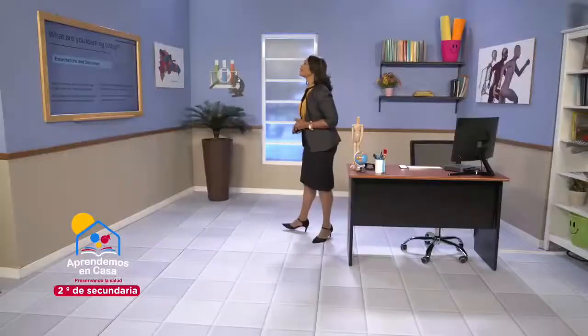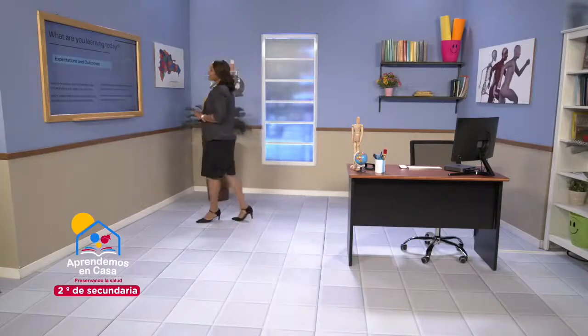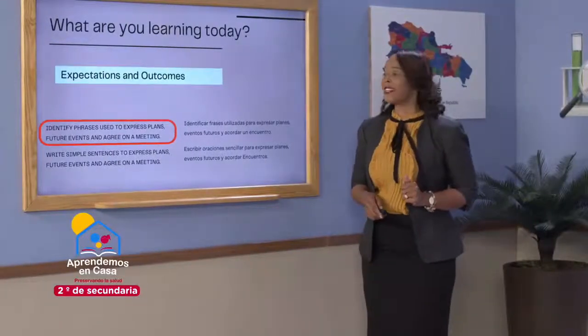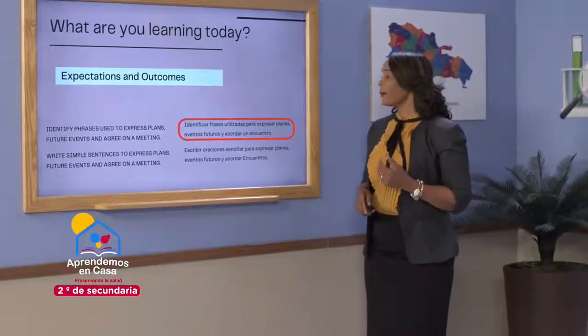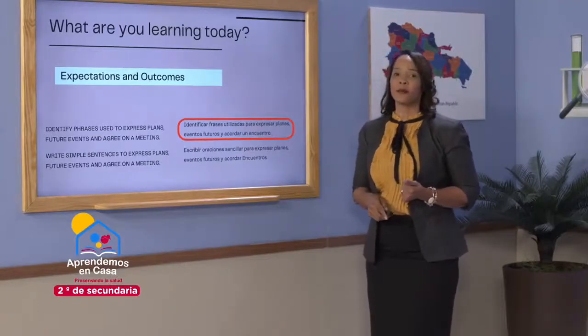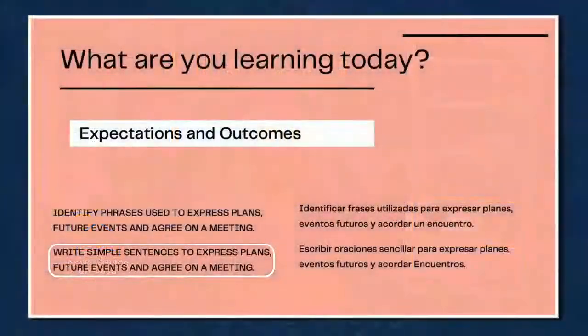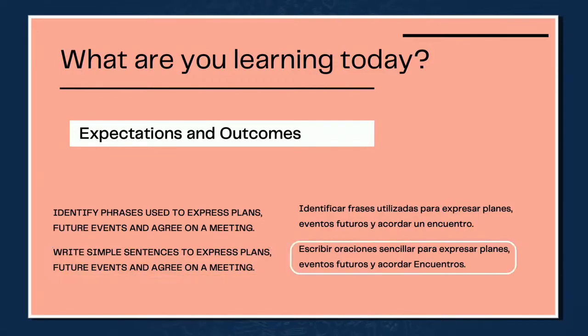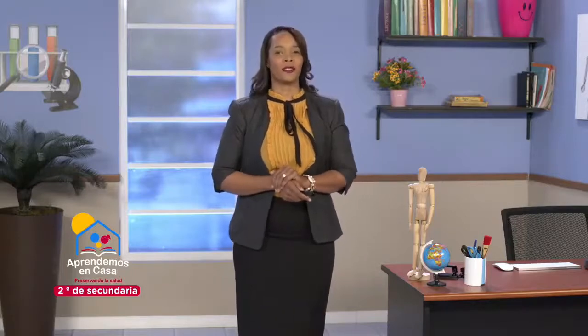So what are you learning in today's class? In today's class, you're going to learn to identify phrases used to express plans, future events, and agree on a meeting. Number two, you're going to write simple sentences to express plans, future events, and agree on a meeting. To begin today's lesson, I want you to read some dialogues. In the dialogues, you're going to see what they're talking about and also try to identify expressions where they talk about future events.